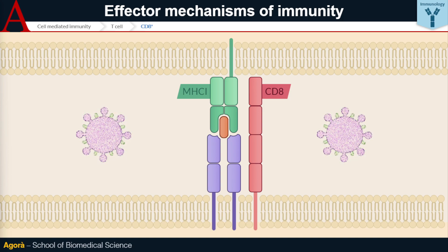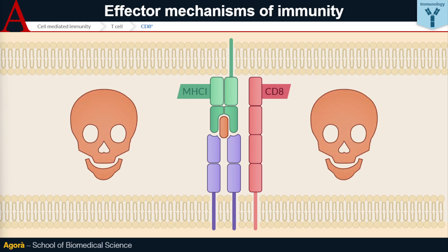CD8-plus effector T lymphocytes are cytotoxic towards the cell expressing the altered antigen and directly lead to the death of the cell. This can be by releasing perforins, granzymes, and lytic enzymes, activating an apoptosis programme.